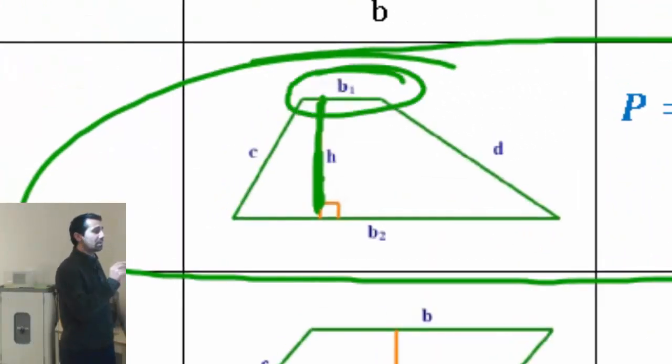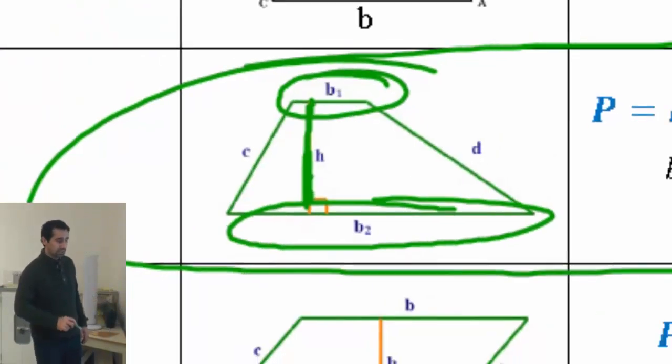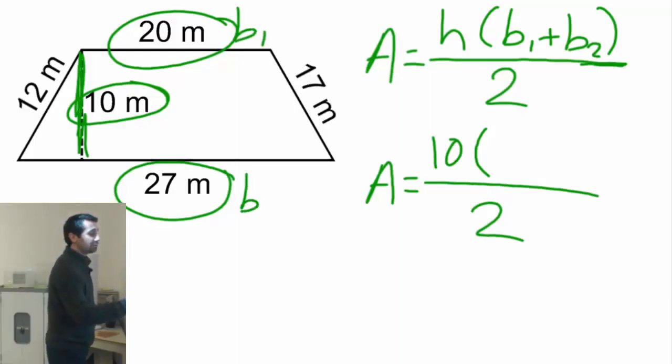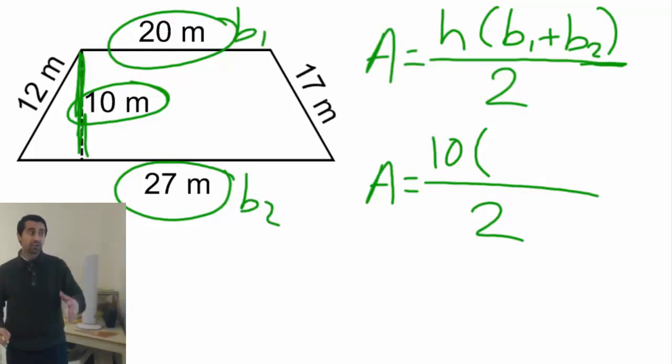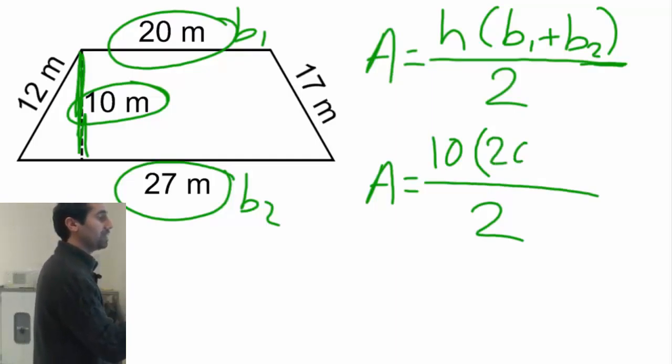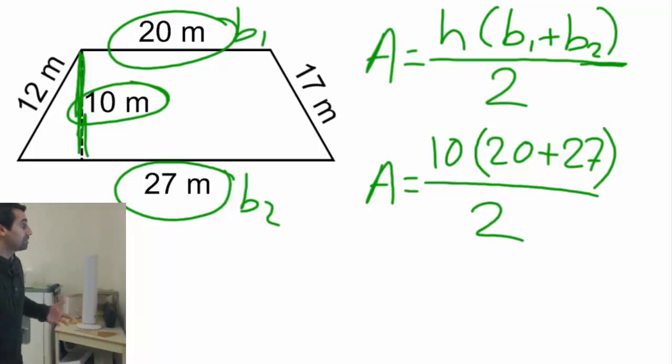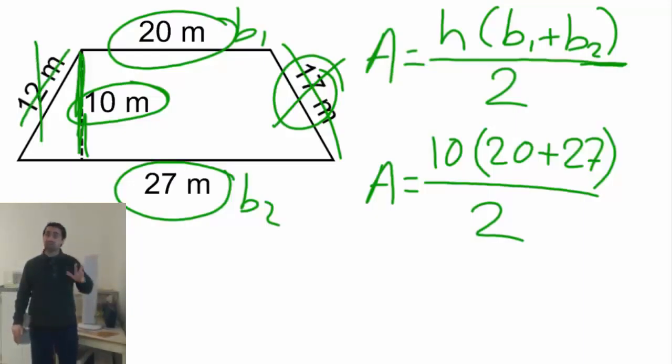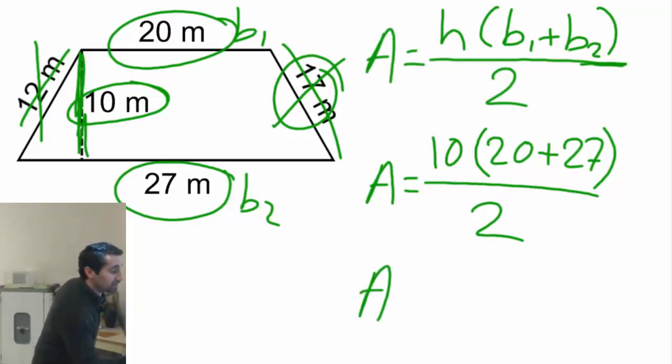B1 is the one on the top, the short one. B2 is in the bottom, that's the longest one. So, this is the top, short. That's the bottom, longest one. So this is B1. That's B2. According to the formula, let's go ahead and write those numbers down. 20 plus 27. And close it. And look, 17 is here. I didn't need that at all. 12 is here. I don't use that. So I just follow the formula. Whatever the formula tells me, I do that.